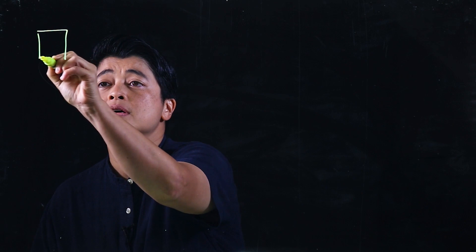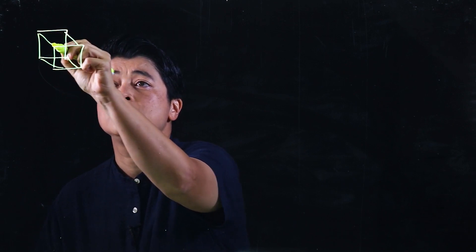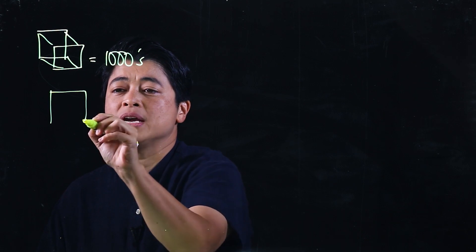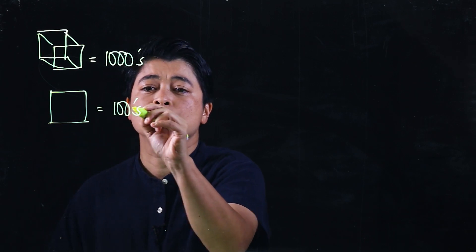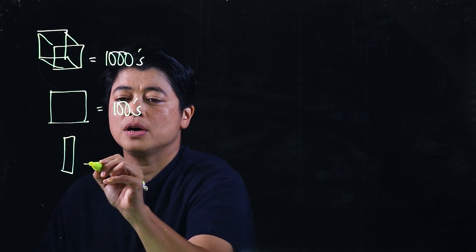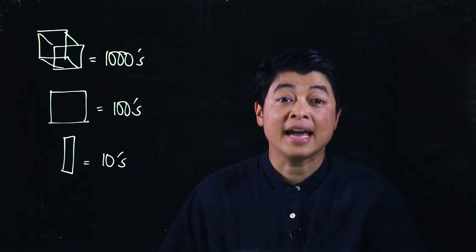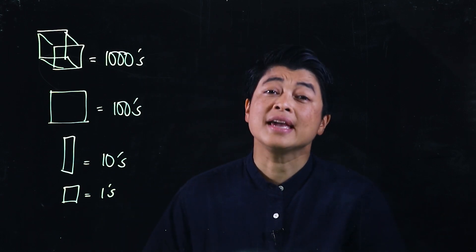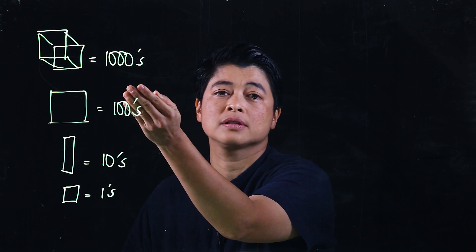Let's begin with Lesson 1 of Chapter 1. If you remember, in Lesson 1 of Chapter 1 in Grade 2 the kids were asked to count — now they have to count until 10,000. The new addition would be a cube, which represents a thousand. Then they had the big blocks equivalent to 100s, the longer block equivalent to 10s, and the single block which represents the ones.